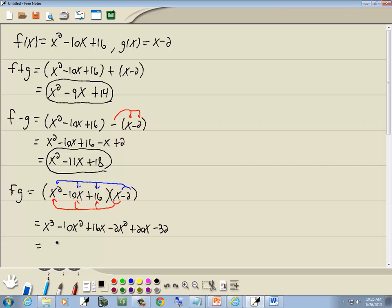Now we want to combine together like terms. We have negative 10 and negative 2 x squared, which is negative 12x squared. We have 16x and 20x here. 16 plus 20 gives us 36x, and then minus 32 at the end.